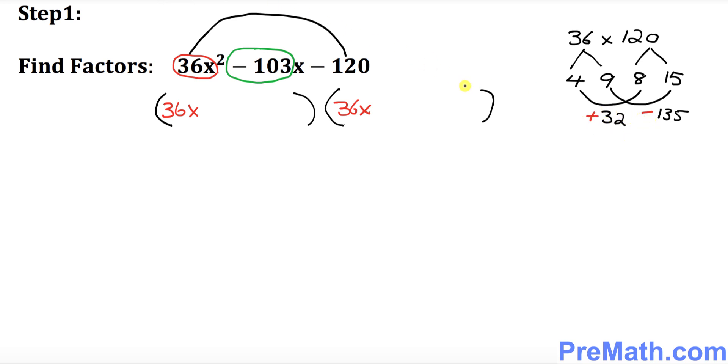What sign is going to be? Right now that's going to be a negative 135 and that's going to be a positive 32. So these numbers are going to work for us. So we're going to go ahead and put down those numbers right up here. Here I'm going to put down plus 32 and here I'm going to put down what? Negative 100 and what? 35.